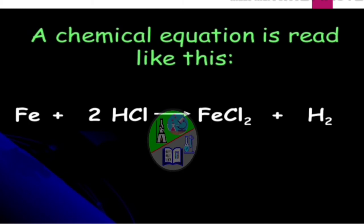So, we can read a chemical equation as: iron, one atom of iron reacts with two atoms of hydrogen chloride. And it gives rise to iron chloride or ferrous chloride and hydrogen.